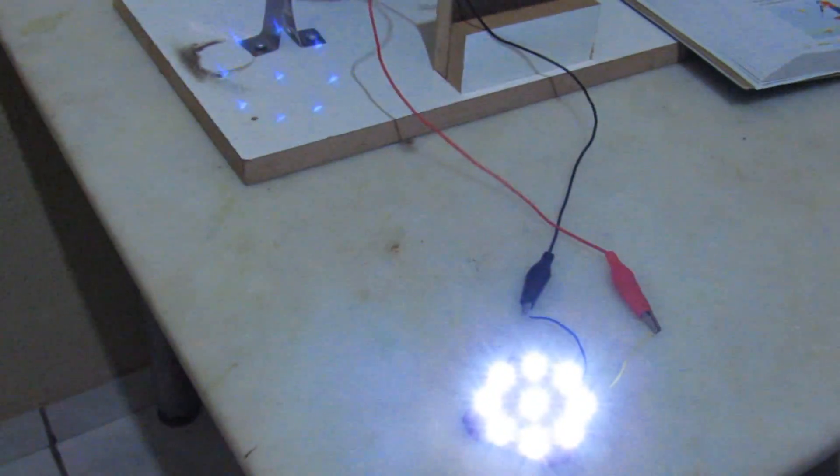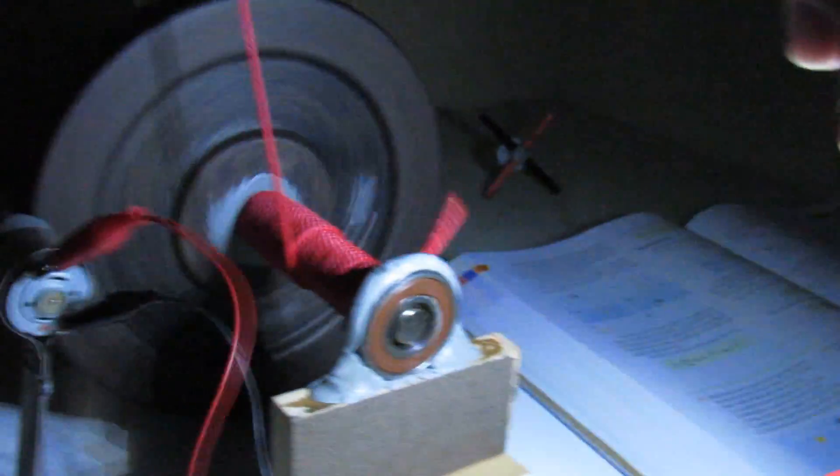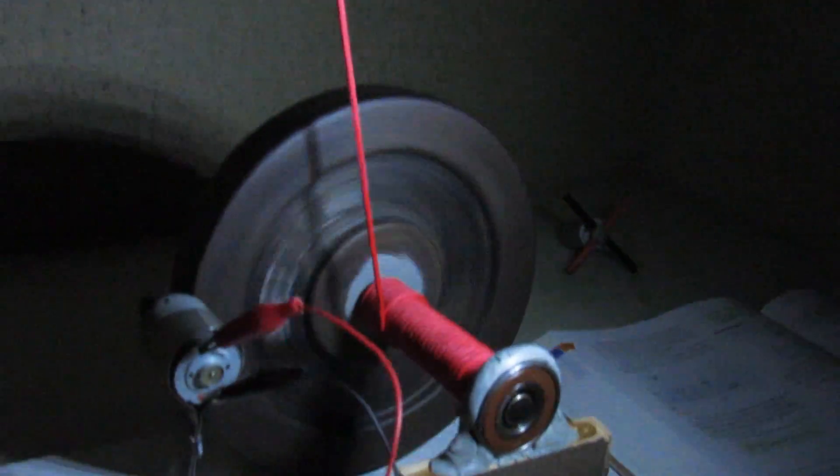Então vejam que dá mesmo pra ler. Está piscando um pouquinho porque falta ainda colocar um capacitor aqui no sistema para filtrar essas flutuações na corrente. Então tá aí, o peso desce, faz girar o disco. Esse disco de alta inércia tem a função de evitar que o sistema trave de vez em quando. Então ele tem mais chance de deslizar sem nenhum obstáculo.